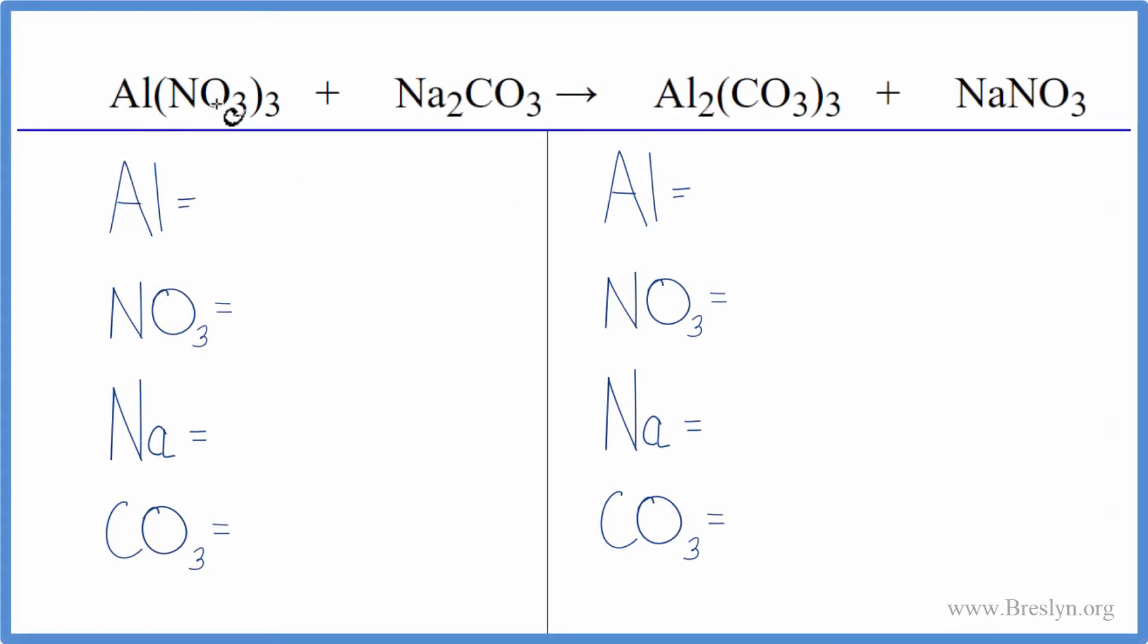To balance this equation here, aluminum nitrate plus sodium carbonate, we'll count the atoms up on each side of the equation. And because this is a double displacement reaction, we're going to use a little trick with the polyatomic ions, with the nitrate and the carbonate here.